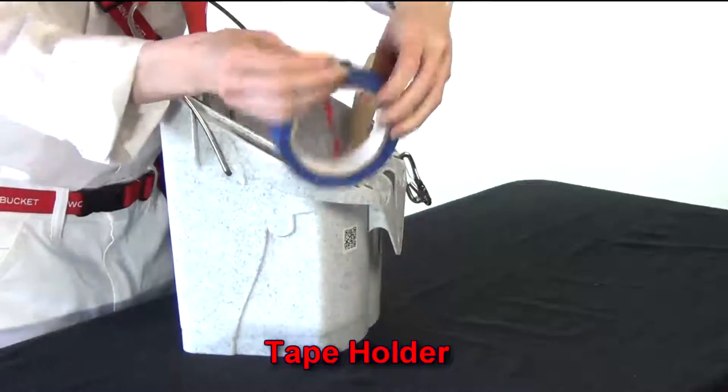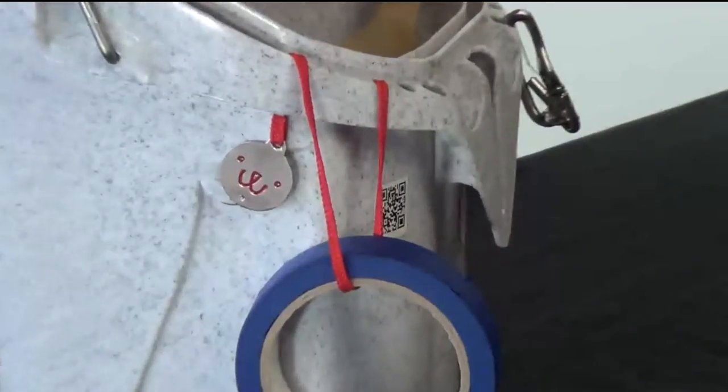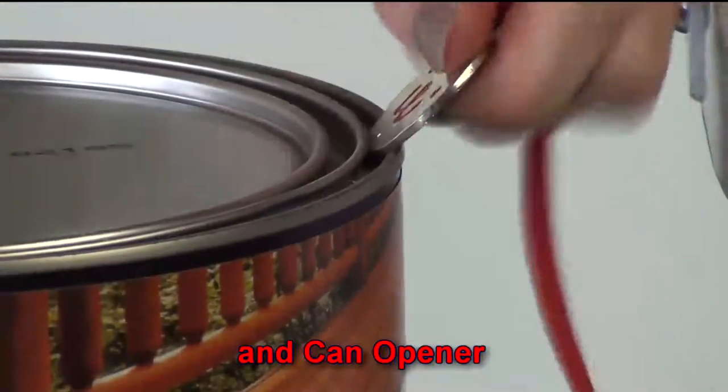There's a handy masking tape holder and can opener on a lanyard. The medallion snaps to the magnet to hold your tape, and you can use the medallion to open your can of paint.